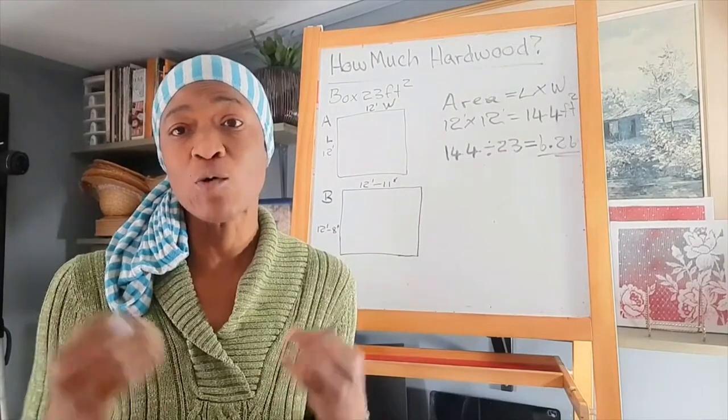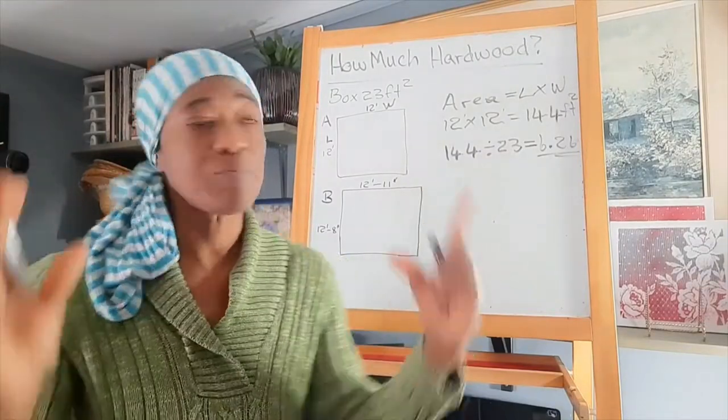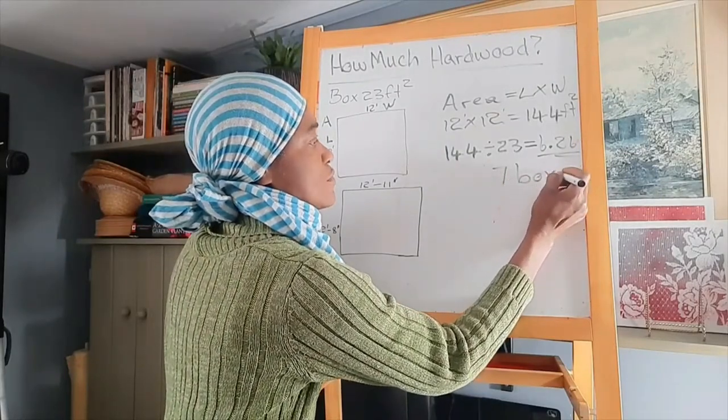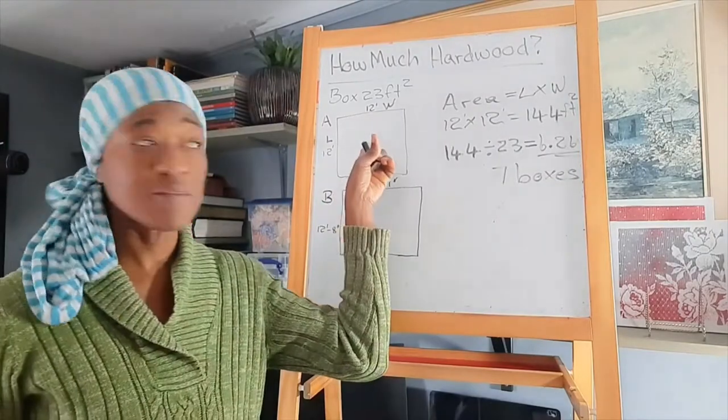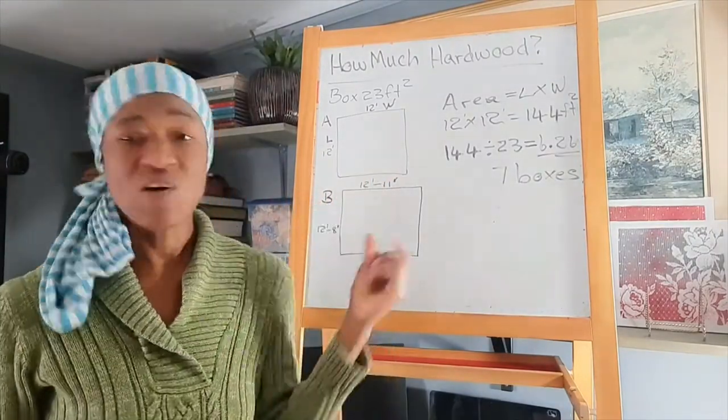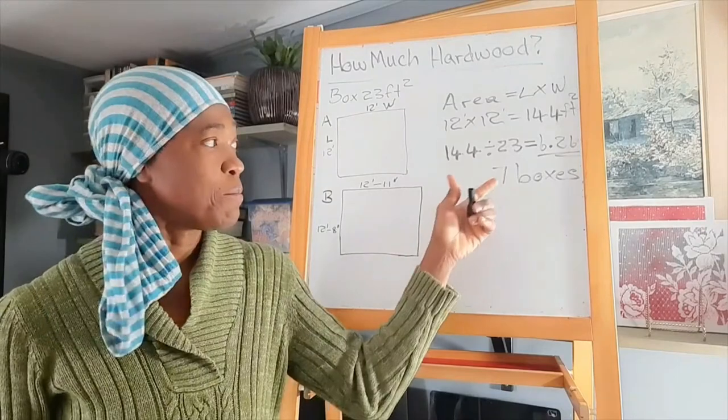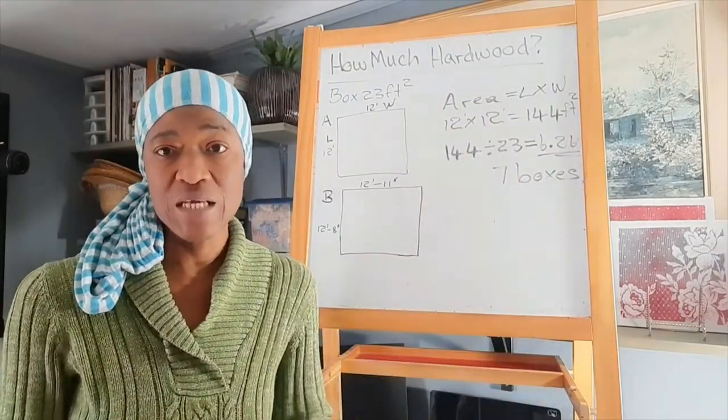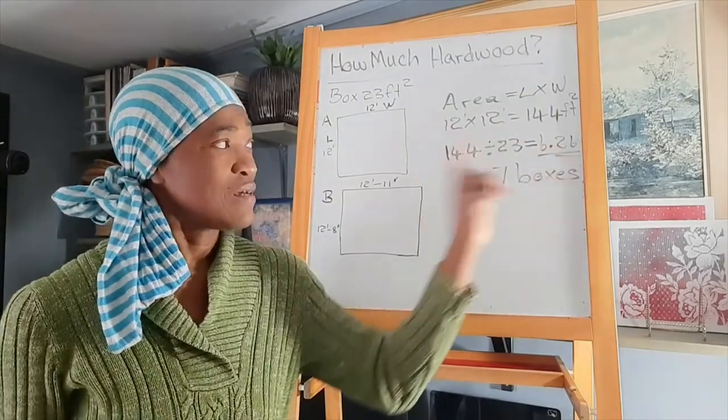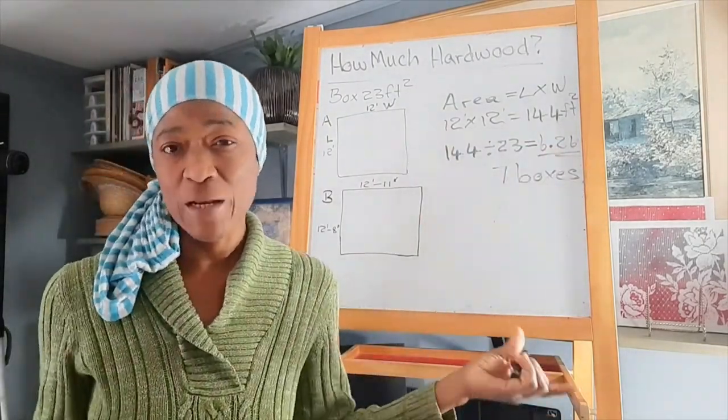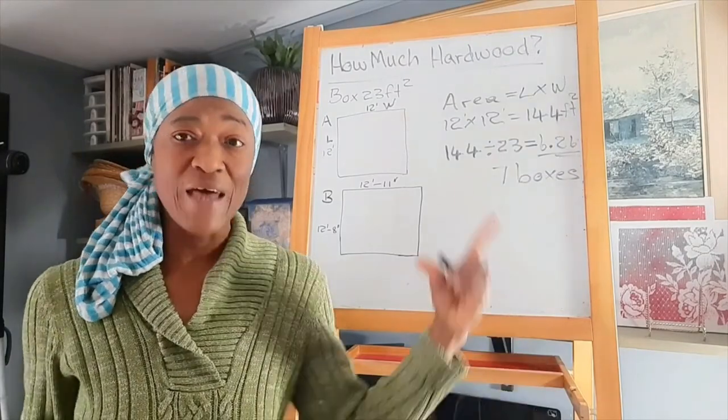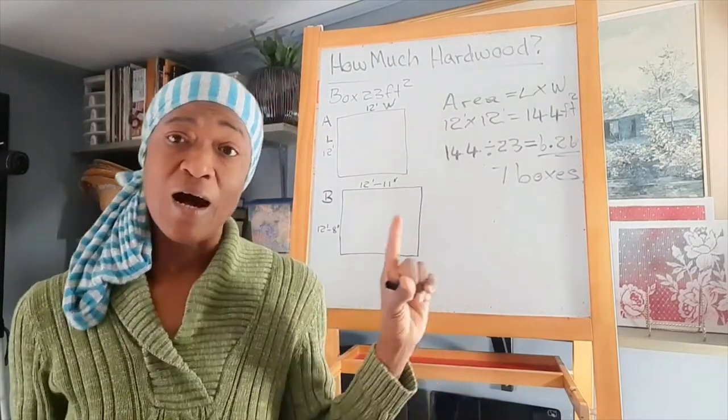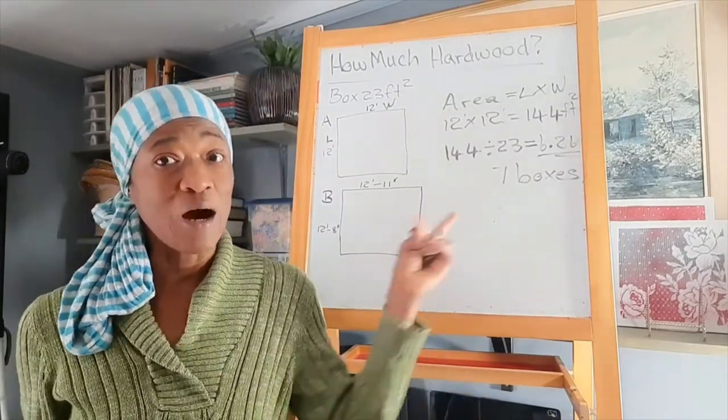However, we have to round up because the wood is sold in boxes. So we will need seven boxes to finish this room. It is also recommended that you buy 10% more on top of whatever you calculate that the room needs. However, because this is 0.26, you will have quite a bit left over in that particular box that we round up. So I wouldn't add another 10% on top of this.